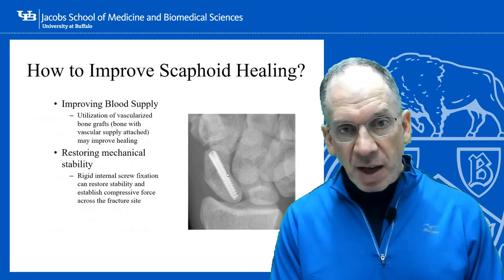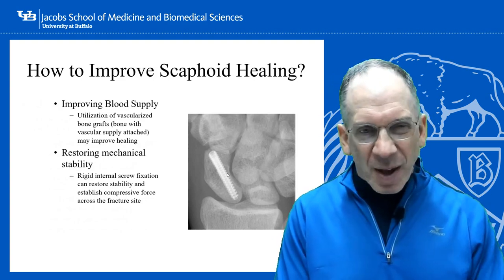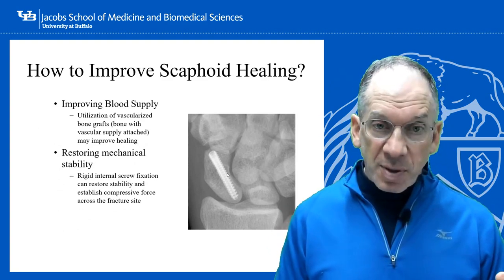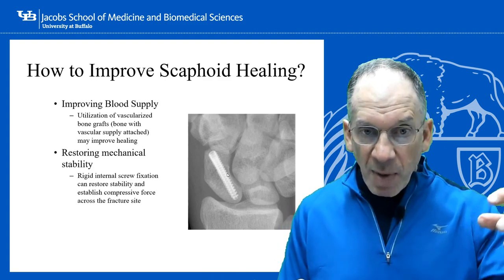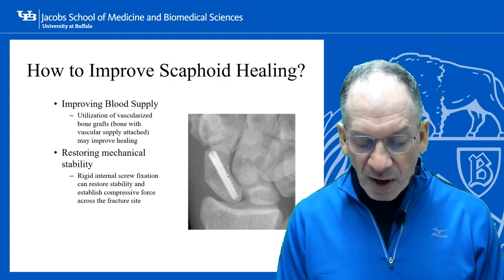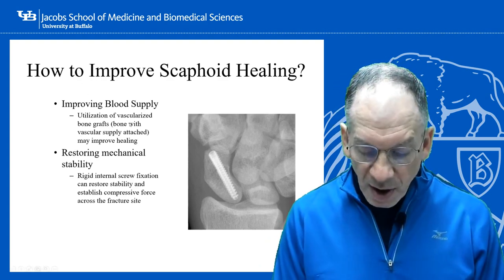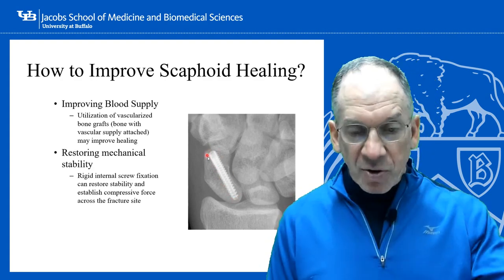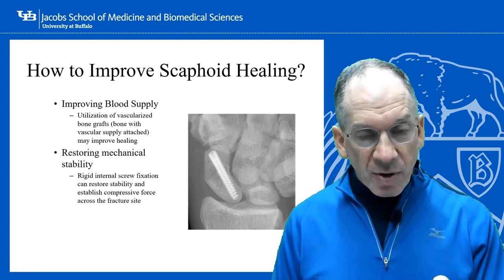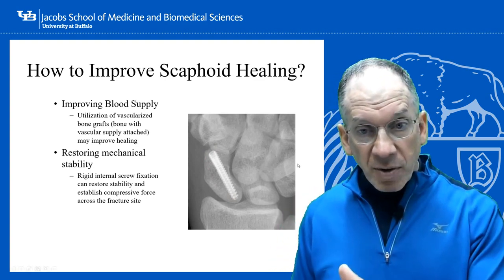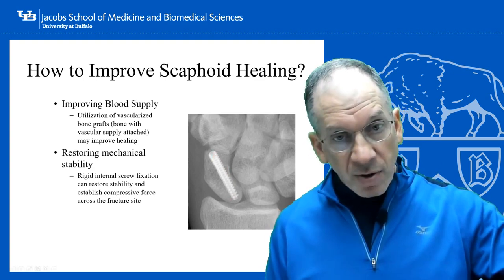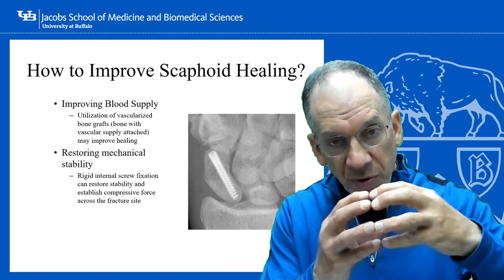How to improve scaphoid healing. Attempts to improve blood supply using vascularized bone graft haven't worked especially well. What we can do well is restore mechanical stability by placing a compression screw between the fragments. This stabilizes the scaphoid and compresses the two fragments together, both of which are very good for fracture healing. The screw has a variable pitch — threads are farther apart at the tip than at the back — so even though threads cross the fracture site, tightening the screw pulls the fragments against each other.